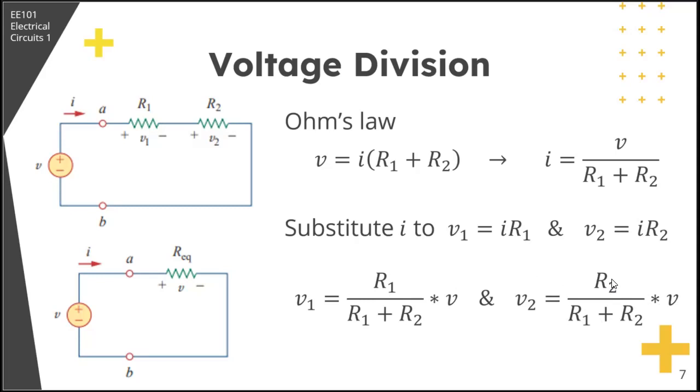From here, we can see that the voltage drop across a resistor is just its resistance divided by the total resistance times the voltage across the elements. For V1 in series, the voltage drop of V1 is equal to the resistance of R1 over the sum of the resistances times the voltage across both. Same for V2, the voltage drop across R2 is equal to R2 over the sum of R1 and R2 times the voltage across.